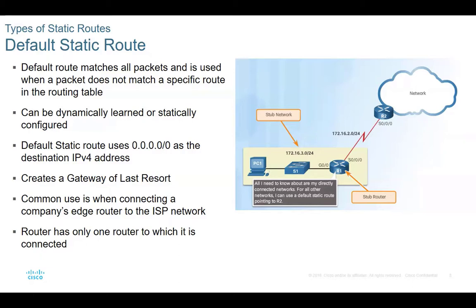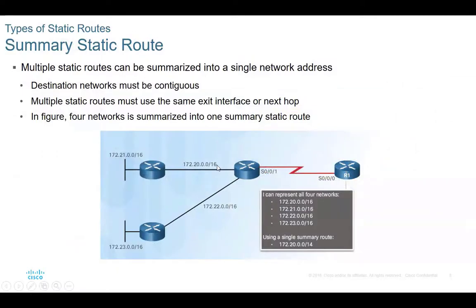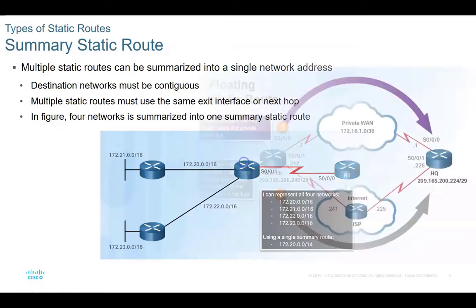You recognize your default static route by 0.0.0.0 with a slash 0, and it creates a gateway of last resort. Static routes in themselves are really built for small shops. We have the summary of a static route: destination networks must be continuous, multiple static routes, et cetera — moving forward.